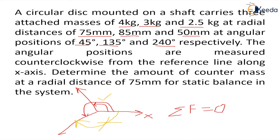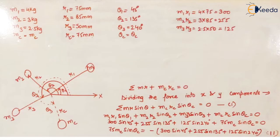In the question it says from the reference line we have to measure the angle counterclockwise. So this is the correct way of measuring the angles. What we have to find out is the amount of counter mass at a radial distance of 75mm for static balance in the system. We have already written all the given data: m1, m2, m3, r1, r2, r3 and theta 1, theta 2, theta 3.